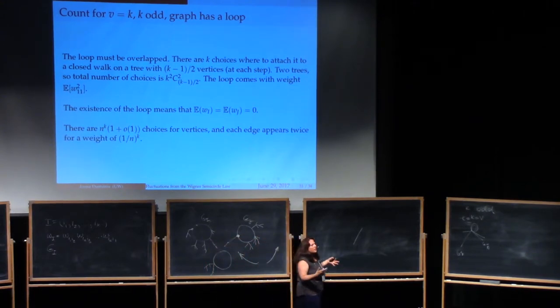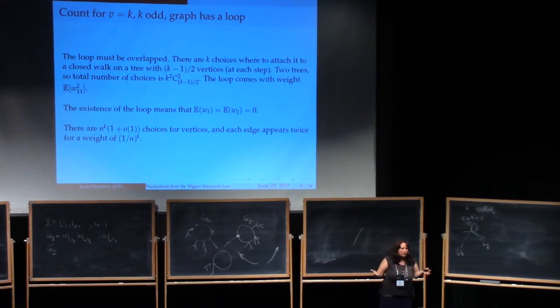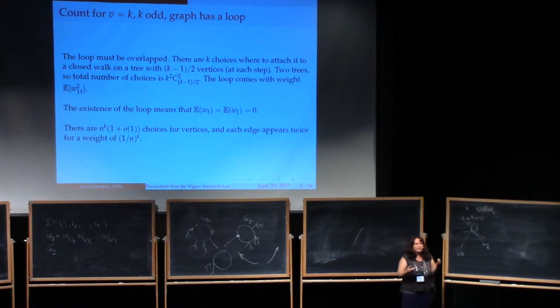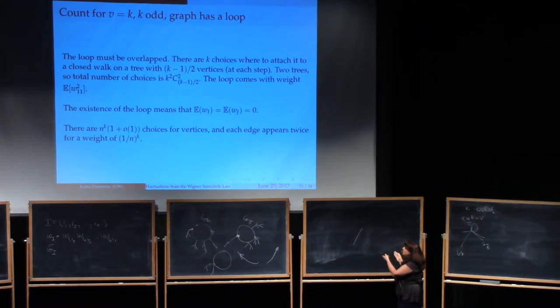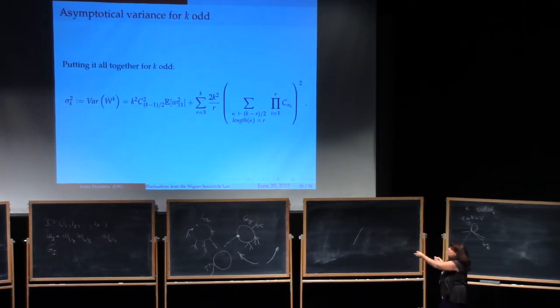So it's the first time so far that we have cared what the variance of the diagonal entries is. Diagonal entries do not appear at all in our calculations for calculating the ESD. Because remember, if you take a diagonal entry, then that means that you give up a choice. So you're not at optimal choices, optimal number of choices for vertices. But here it's important. So the weight of the loop is important. It's going to be the expected value of w11 square. And that's going to be the weight that those terms are going to appear with in the total count. And the rest is just as before. It comes from the choices that we have to do for the cycles. So this is the variance for the case when k is odd. Fairly similar to for the case when k is even.